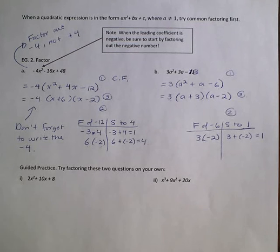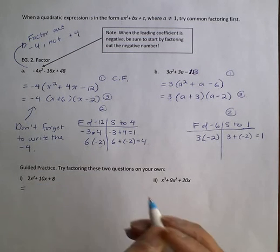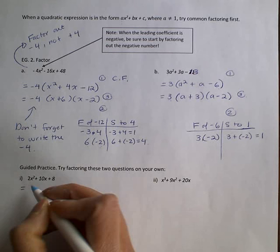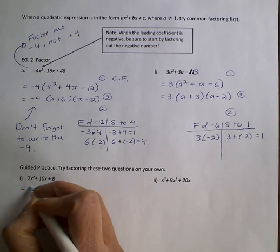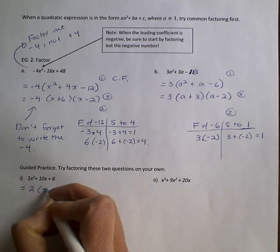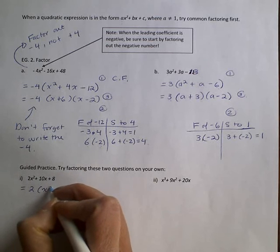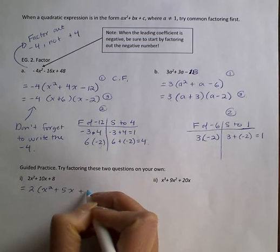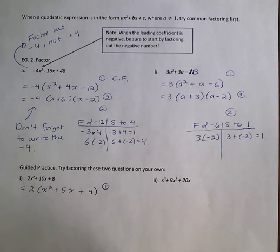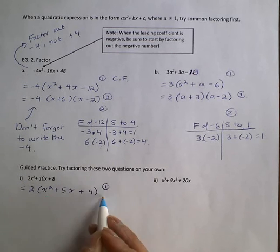So now I'm going to take up the answers. So we are going to factor these questions fully. We always factor fully. So a is not 1. We start by common factoring as our first step. So you should have had 2 times x squared plus 5x plus 4. That would have been your first step.